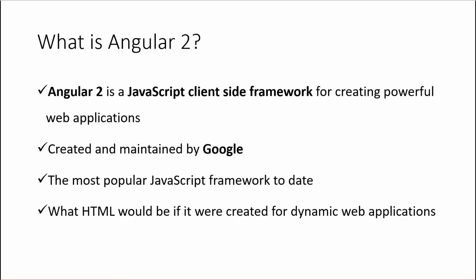So, what is Angular 2? There are a lot of different JavaScript technologies out there — some are libraries, some are plugins, extensions, frameworks. Angular 2 is a framework, and it works on the client side. It's used to create very powerful web applications. It was created and is maintained by Google. It is the most popular JavaScript framework to date, and it's often described as what HTML would have been if it were created for dynamic web applications and not static websites.